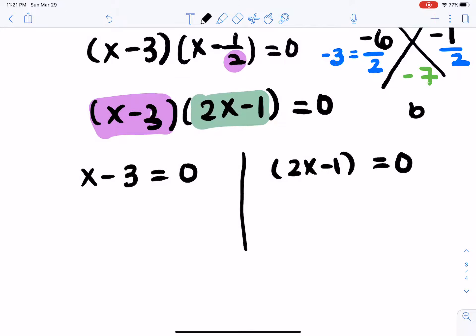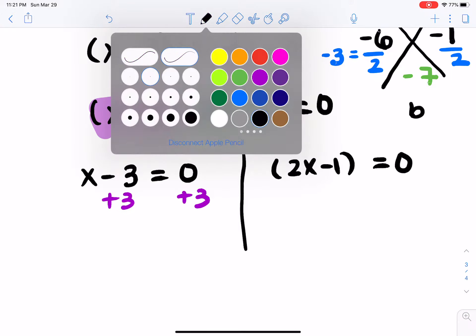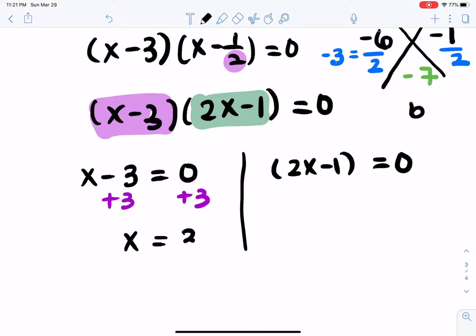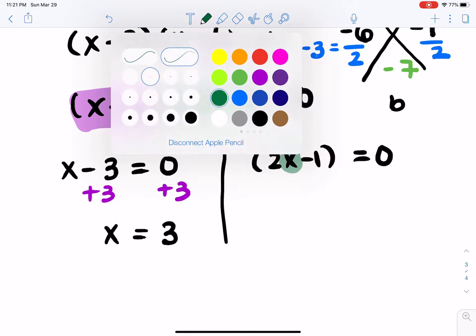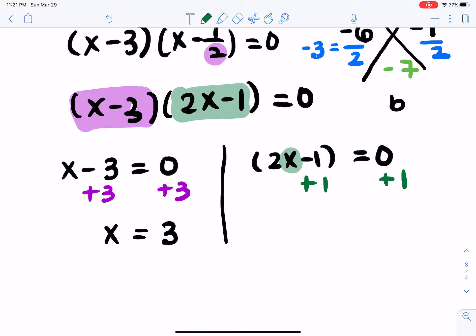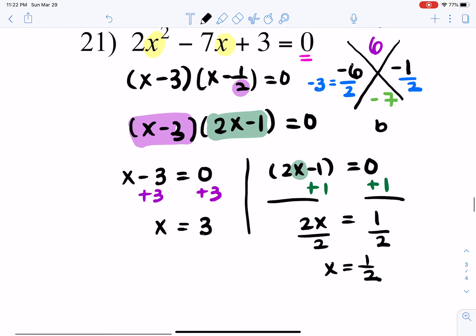So here we're going to add 3 on each side, and you get x equals positive 3. And to solve for x in this equation, you'll add 1 on each side. Then you get 2x equals 1, divided by 2. x will equal 1 half. So your two answers are x equals 3 and x equals 1 half.